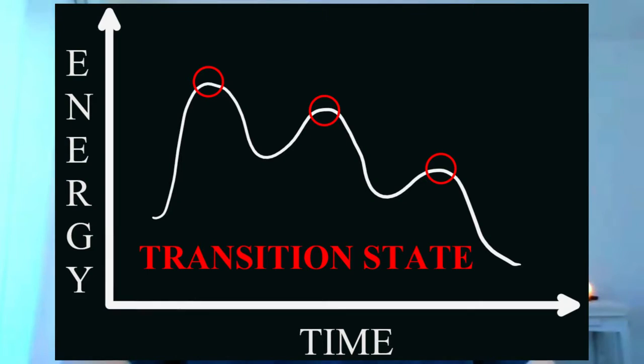Now let us take a deeper look into what a transition state is. The transition state is going to be the energy peak in the reaction, and this means that at that point, the molecule undergoing the reaction is going to be extremely unstable. Another characteristic of transition states is that they're extremely rapid,